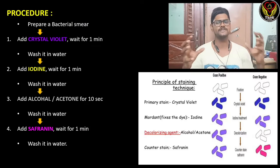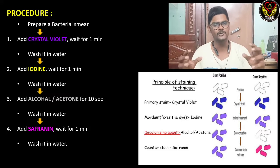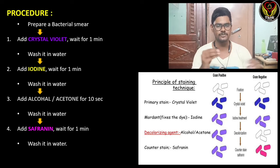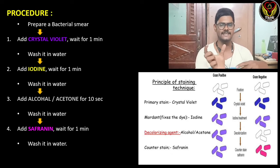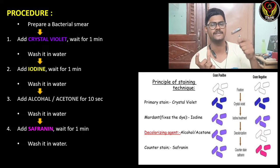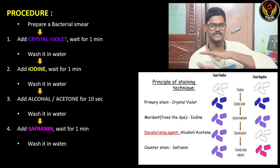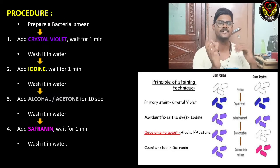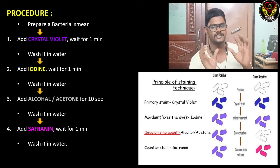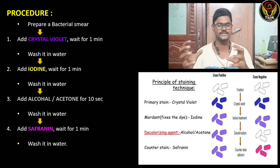Coming to the procedure, first we have to prepare a bacterial smear. I've already made a video on preparing a bacterial smear, so you can check it out for easy understanding. Simply, we take a glass slide, put two to three drops of water, pick up a colony of bacteria using an inoculation loop, and make a smear — a flat, round, thin layer of bacteria. Then we heat it to make it dry.